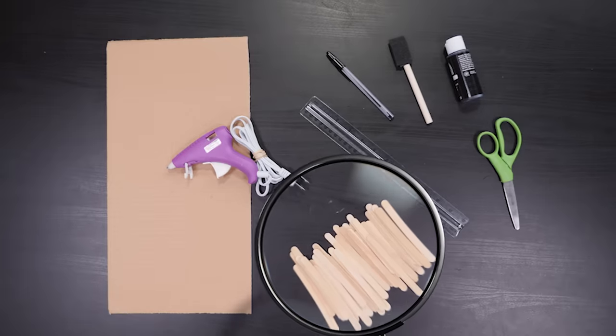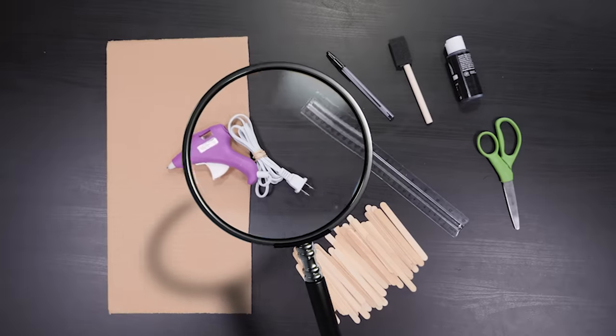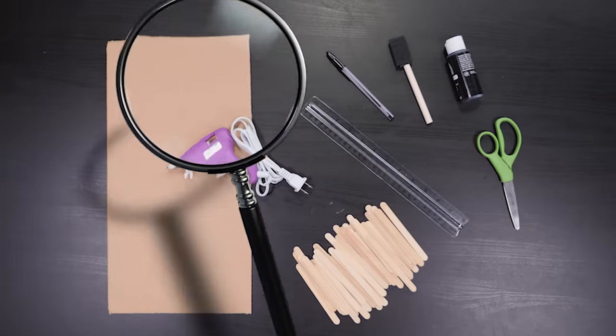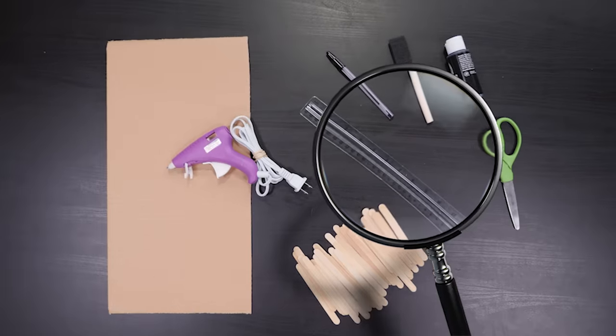I'm going to show you how to keep your spy gear safe in a puzzle box safe. It's a simple looking box but has a trick latch to confuse thieves. For this you'll need popsicle sticks, a hot glue gun, heavy duty scissors, black paint, a sponge brush, a paper towel, and a ruler.